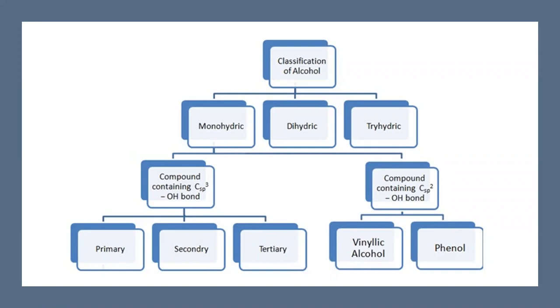In summary of the classification so far: based on number of OH groups, we have monohydric, dihydric, trihydric, or polyhydric. Based on the nature of the carbon to which OH is bonded, we have primary, secondary, and tertiary. Then, based on whether OH is attached to an SP3 carbon adjacent to an SP2 carbon, or directly to an SP2 carbon, we get allylic, benzylic, or vinylic alcohols and phenols.